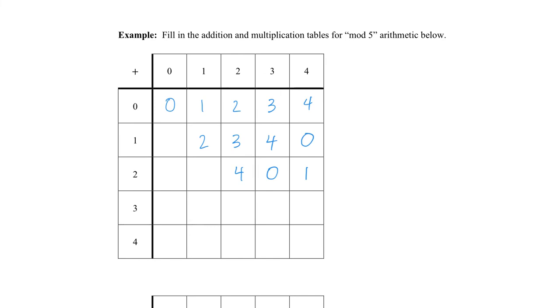In the next row, I'm going to write 3 plus 3 is 6, which is 1, plus 4 we would get 2. And then finally, at the very bottom of our table, we'd have 4 plus 4, which is 8, and I get 3.